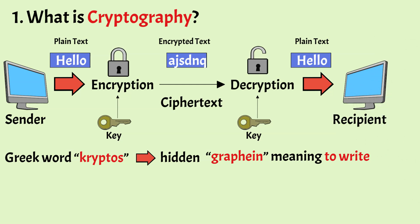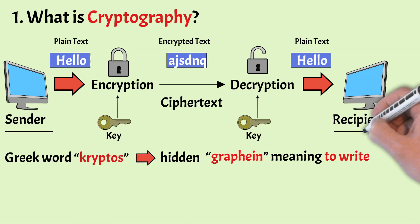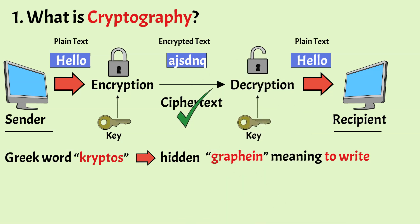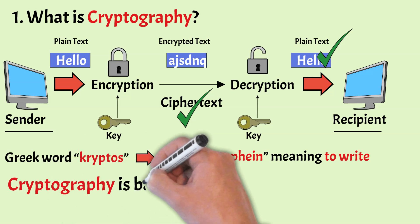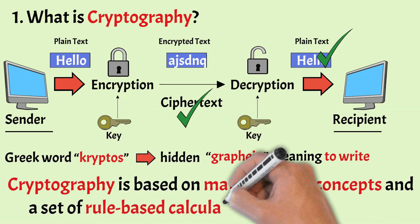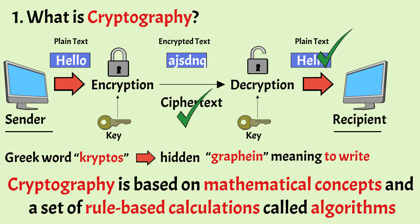In short, cryptography is the practice of protecting information in transit from unauthorized interception and tampering. The information cannot be modified in transit between the sender and the receiver. It involves the process of converting a message or plain text into what is known as cipher text, where only the intended recipient can convert it back to the original plain text. Cryptography is based on mathematical concepts and a set of rule-based calculations called algorithms.